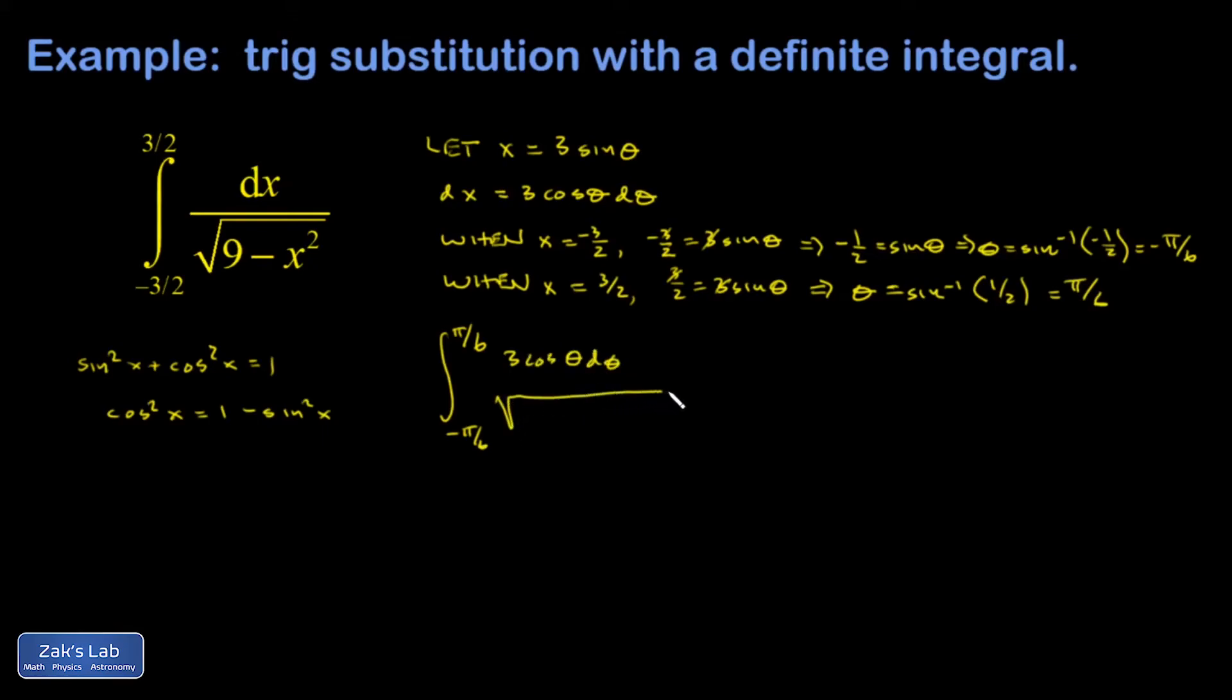In my square root, I have 9 minus 9 sine squared theta. I can factor out that 9 in the square root, which gives me a 3 on the outside. The 3 is going to cancel, but I'll go ahead and show it in this step.